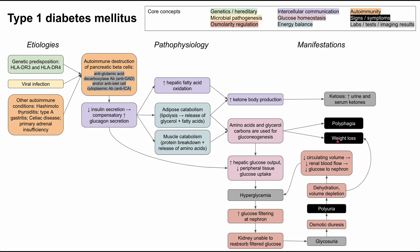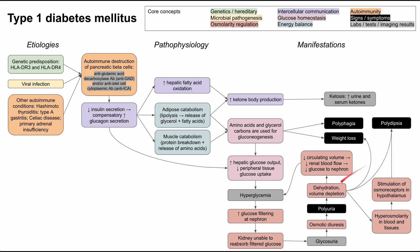This dehydration and volume depletion also contributes to weight loss — not only is the body in a catabolic state breaking itself down to make glucose, but fluids are also being lost through urination, which is why these patients can present very thin and very dehydrated. Because of the dehydration and volume depletion, patients are also extremely thirsty — polydipsia. Additionally, dehydration causes hyperosmolarity in the blood and tissues, with relatively high sodium and potassium, which stimulates osmoreceptors in the hypothalamus, further contributing to thirst.